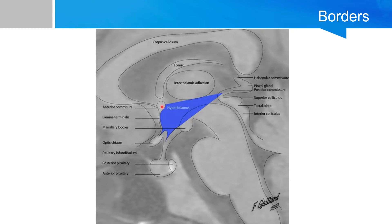Anteriorly, you have the lamina terminalis. The floor, or inferiorly, is basically the floor of the third ventricle — the tuber cinereum, the infundibulum, and the mammillary bodies. Superiorly, you run into the thalamus. Laterally, you run into the internal capsule as the outer boundary, and medially is the cavity of the third ventricle.